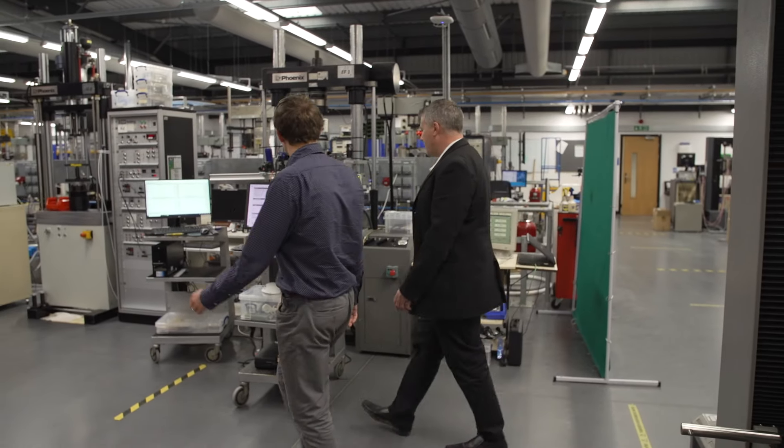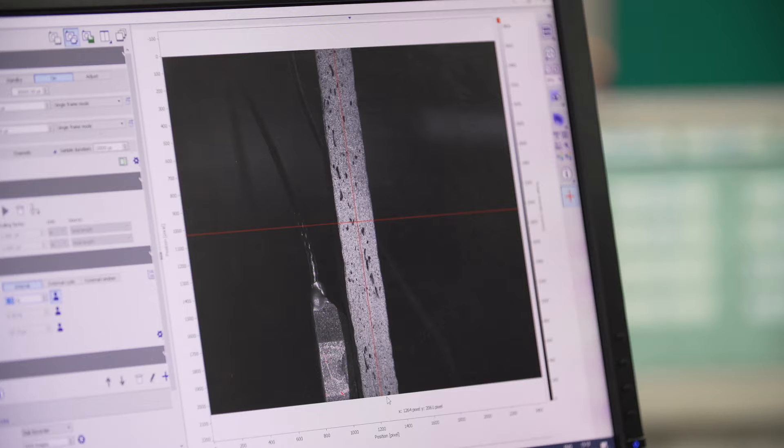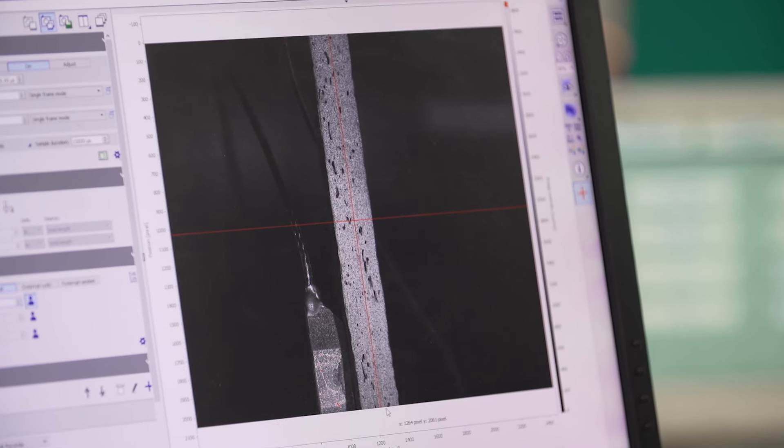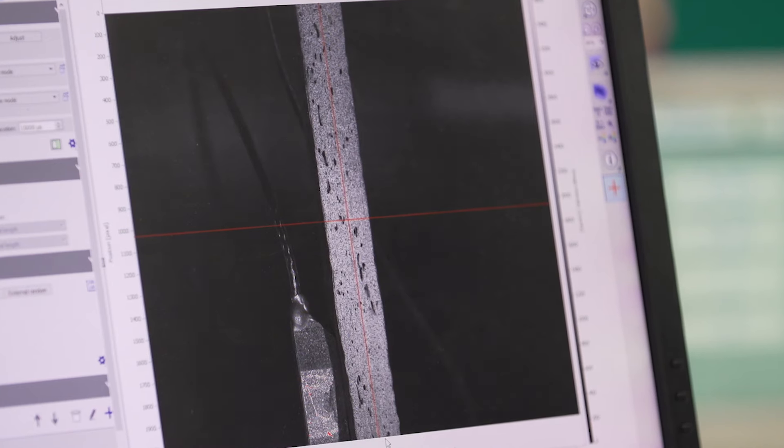So CMCs generally consist of continuous fibers or whiskers within a ceramic matrix and this gives us a real benefit over their monolithic counterparts, namely their brittleness. We want to use these materials in industry due to their brilliant specific strength and ultra high temperature capability, and they also have brilliant thermal properties as well.